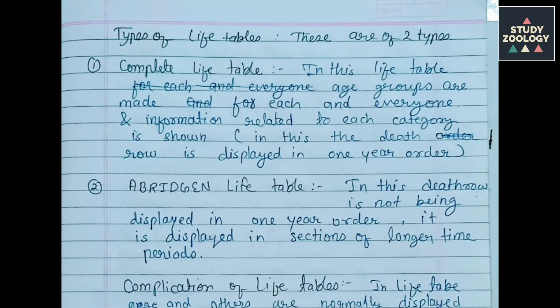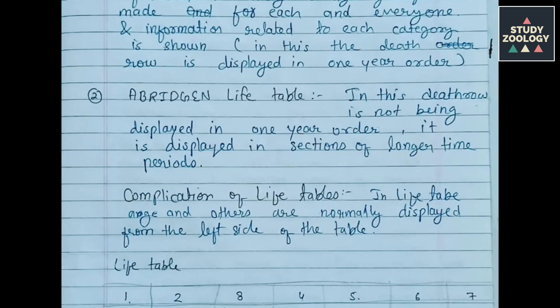Types of Life Tables: There are two types. First is Complete Life Table — in this, age groups are made for each and every individual and information related to each category is shown, and the death row is displayed in one year order. Second is Abridged Life Table — in this, the death row is not displayed in one year order; it is displayed in sections of longer time periods.